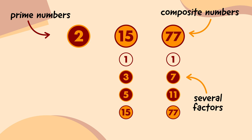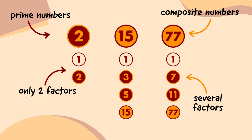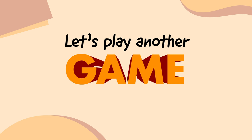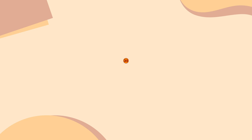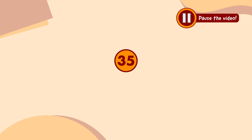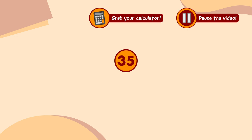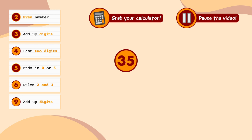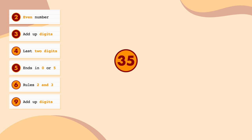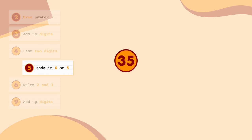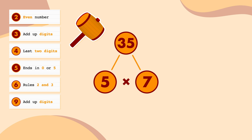Let's play another game. I'm going to show you a number and I want you to break it down into all of its prime factors. Here's the first number: 35. Any number ending in 0 or 5 can be divided by 5. 35 divided by 5 is equal to 7, so we can break 35 into 5 and 7. Both 5 and 7 are prime numbers, so we've gone as far as we can. 35 as a product of prime numbers equals 5 times 7.